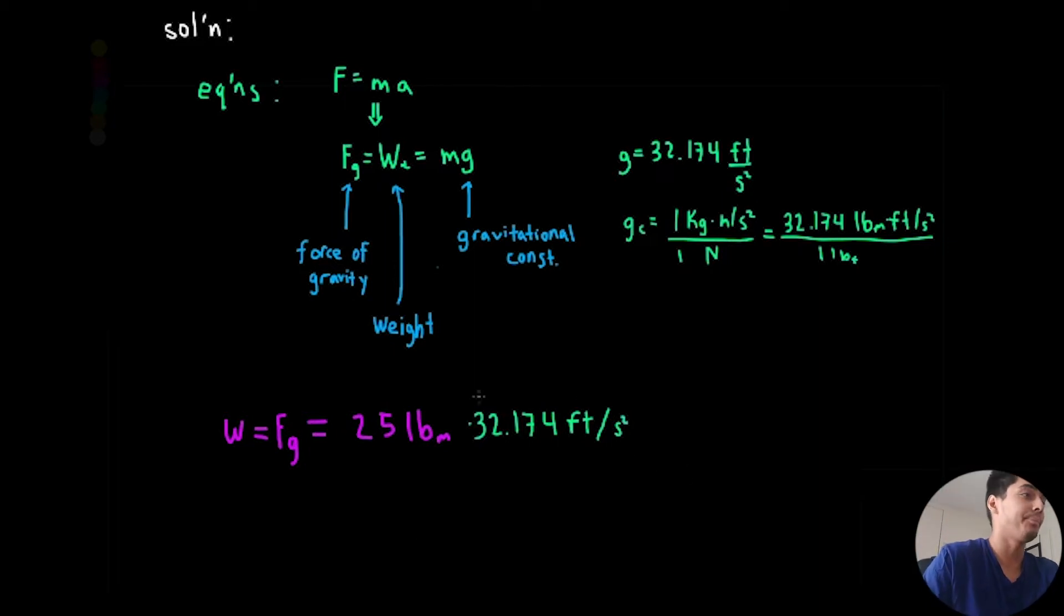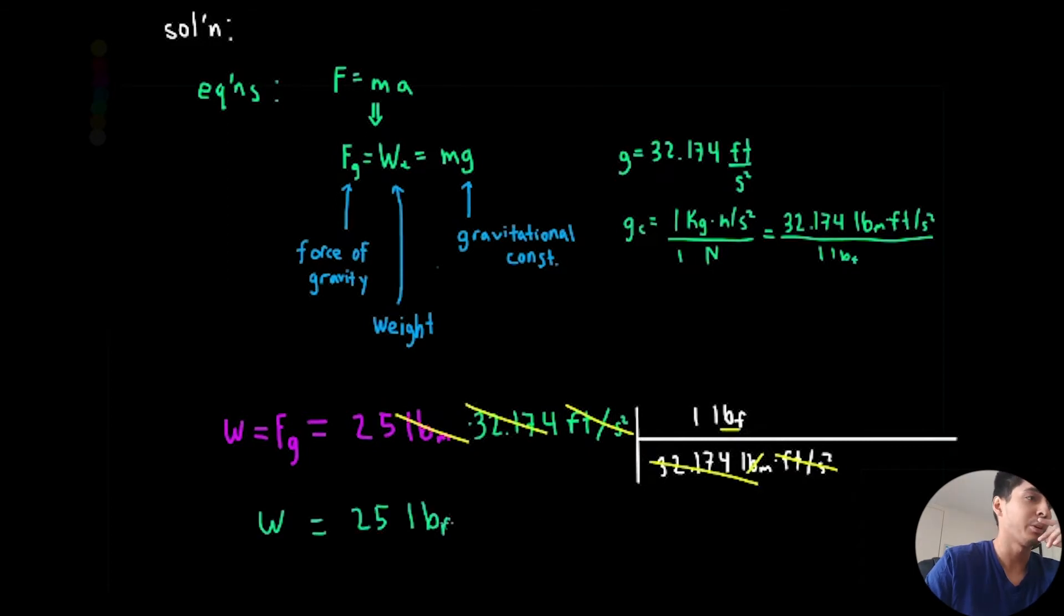I'm going to divide by this conversion factor and it should cancel out to give us pounds-force. So if we divide 32.174 pound mass times feet per second squared per pound-force, if we try to cancel these out, feet per second squared cancels, pound mass cancels, and we are indeed left with pound-force. We can even cancel out the 32.174. So the weight is actually the same thing as the pound mass, it's just 25 pounds-force.